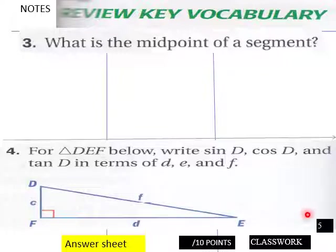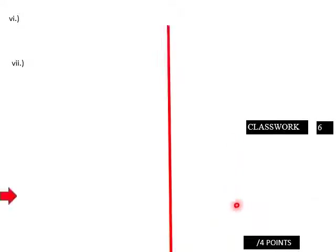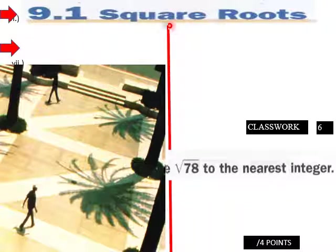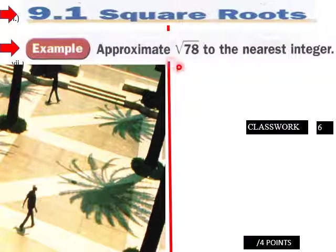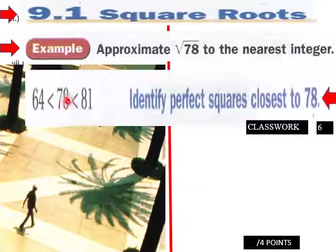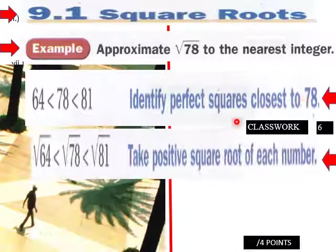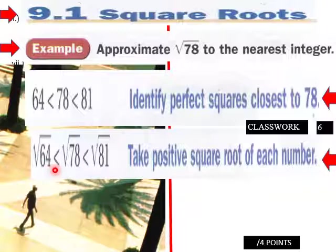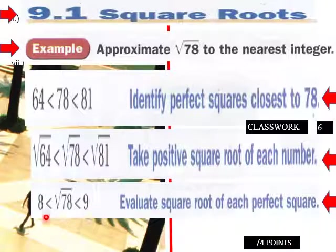On page six, we get into an example here for 9.1 square roots. Approximate the square root of 78 to the nearest integer. So 64, we got perfect squares here, 64 and 81, and then 78 is in between the two, right? So identify perfect squares closest to 78. So √64 < √78 < √81. Take positive square root of each number, so you have 8 < √78 < 9. Evaluate square root of each perfect square.